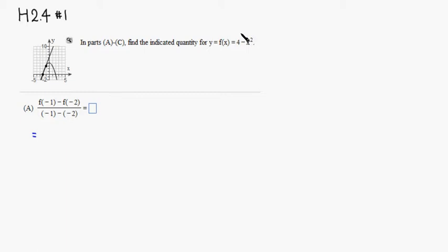So it's going to be 3 minus f of negative 2. So 4 minus negative 2 squared would be 4 minus 4, so it's actually 0.